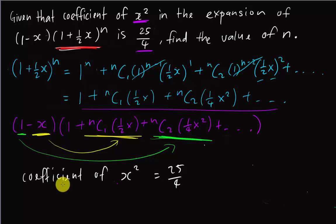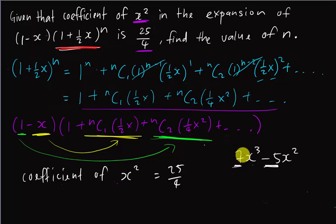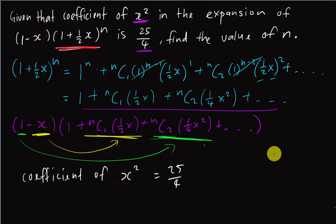Just a quick note on what 'coefficient' means: for example, in 7x³ - 5x², the coefficient of x² is -5 — it's the number in front of x². The coefficient of x³ here would be positive 7.